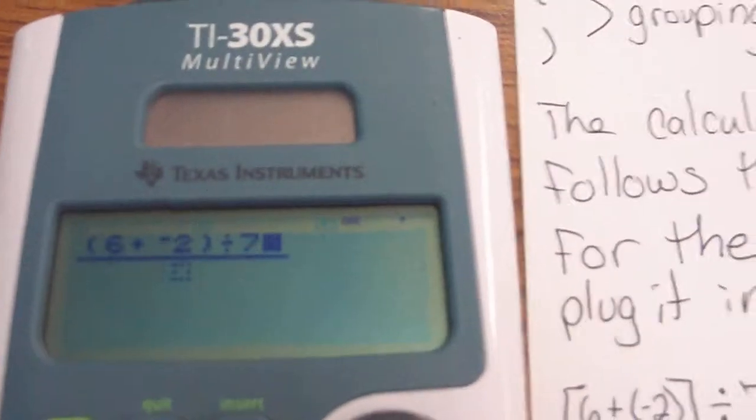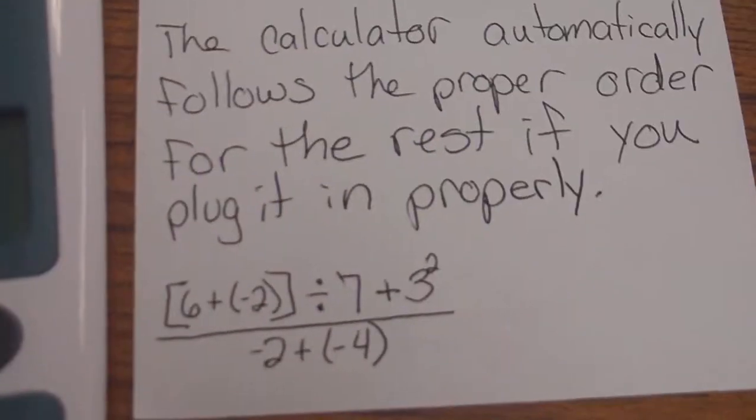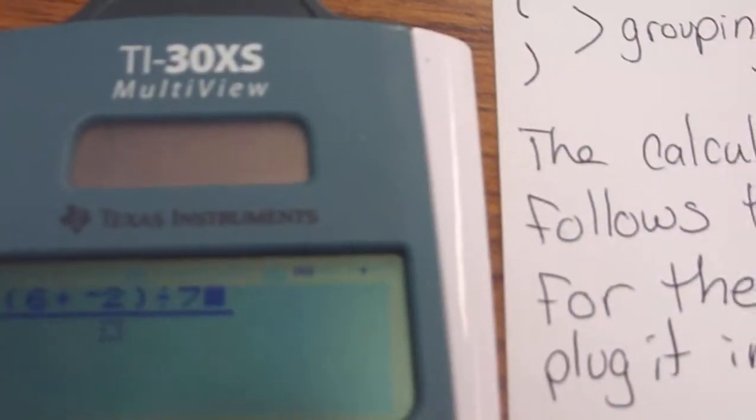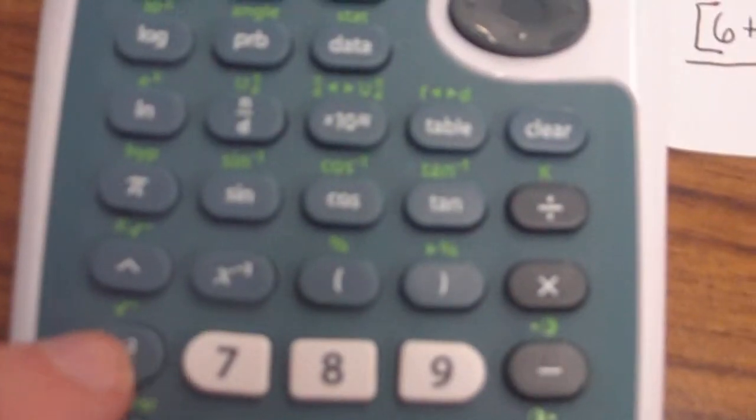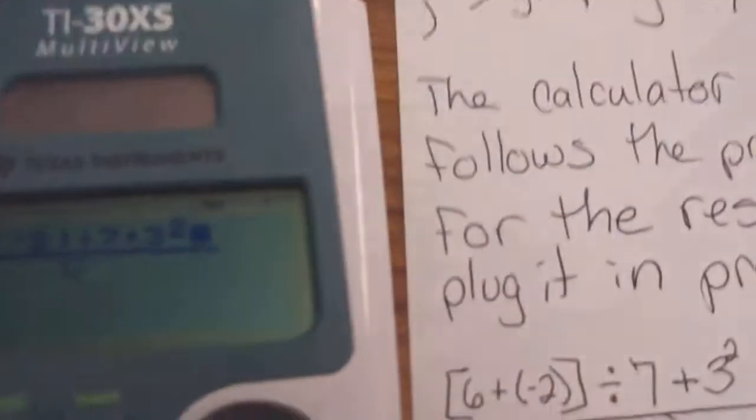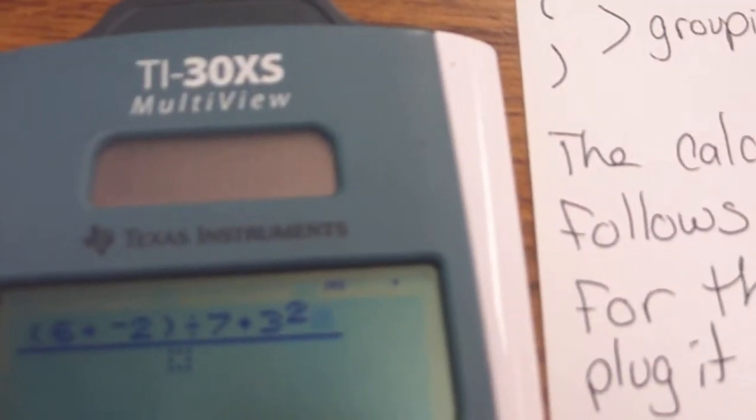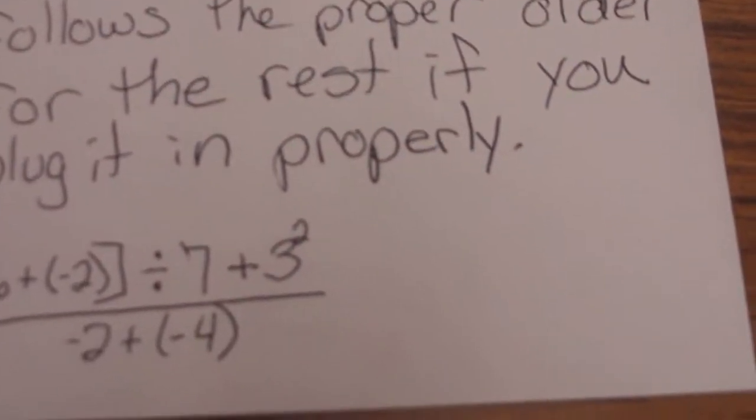Divided by 7. Plus 3 squared. I'm going to hit 3. And then since it's squared, I'm just going to hit my x squared button right here. I could use the caret as well. And you'll notice, I'm going to hit down to get to the denominator, that the numerator looks just like what I've asked us to do here.